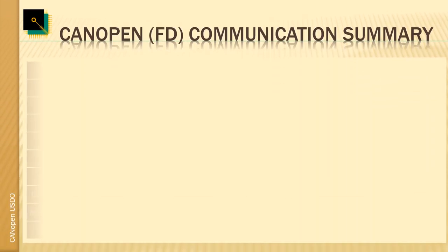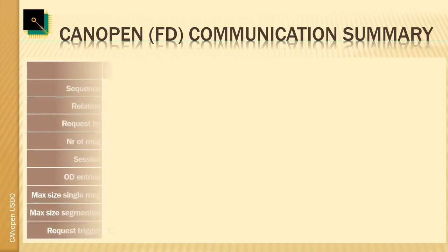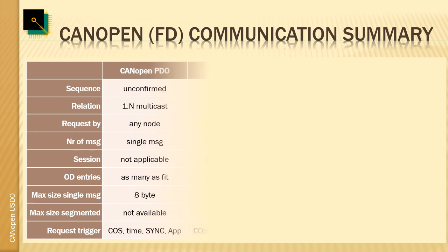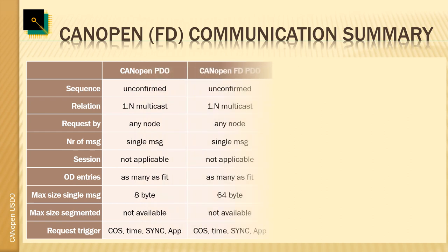Reviewing the different CANOpen and CANOpenFD communication methods: the difference between a CANOpen PDO and a CANOpenFD PDO is primarily the size — a CANOpenFD PDO can have up to 64 bytes, whereas a CANOpen PDO is limited to 8 bytes. Other than that, PDOs are always multicast, so the devices producing them just fire them off and it's up to the receivers to decide if they want to receive those — a 1-to-n relation. In regards to triggering, PDOs can be triggered by the application but also by various automated triggers: change of state, time, sync, and sync with a counter.